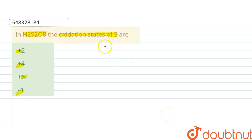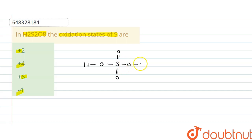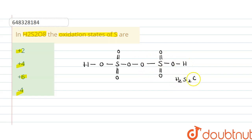In H₂S₂O₈, the structure is: H-O-S(=O)(=O)-O-O-S(=O)(=O)-O-H. This is the structure of H₂S₂O₈.